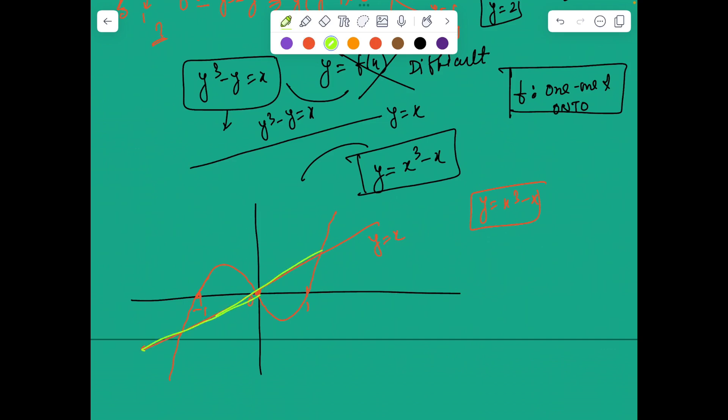But my actual function was the reflection of this along the line y equal to x. So this, let's say this line y equal to x. So my actual function is this reflection. So it is going to look something like this, right.